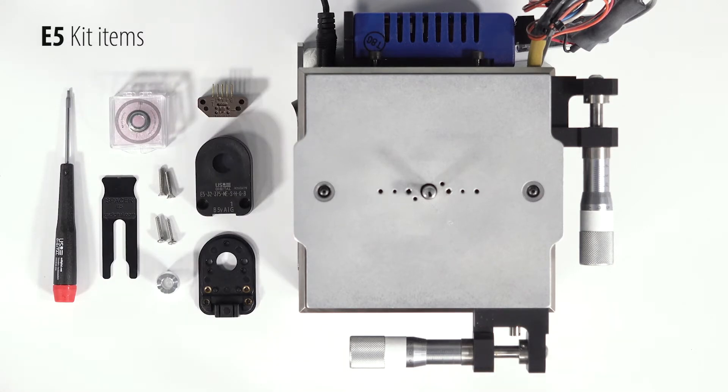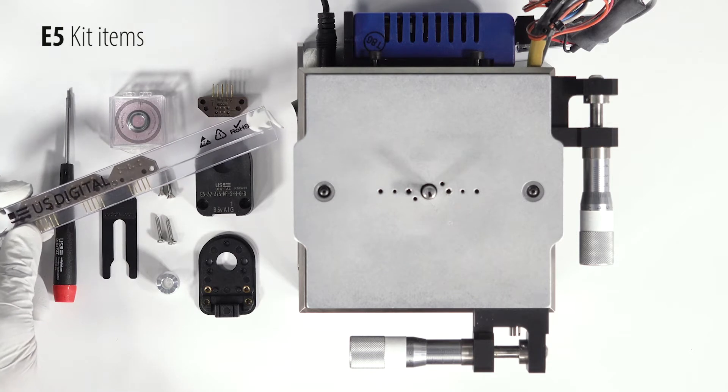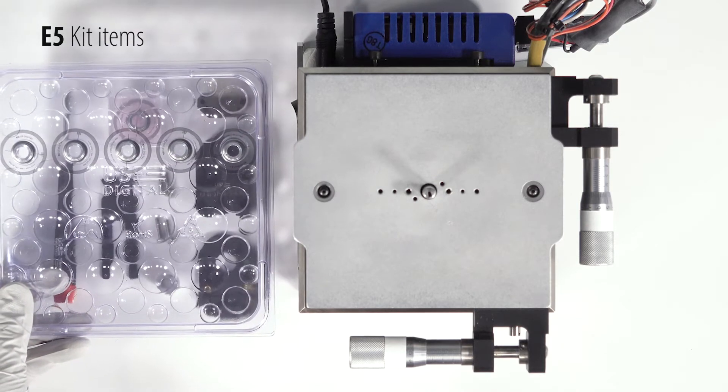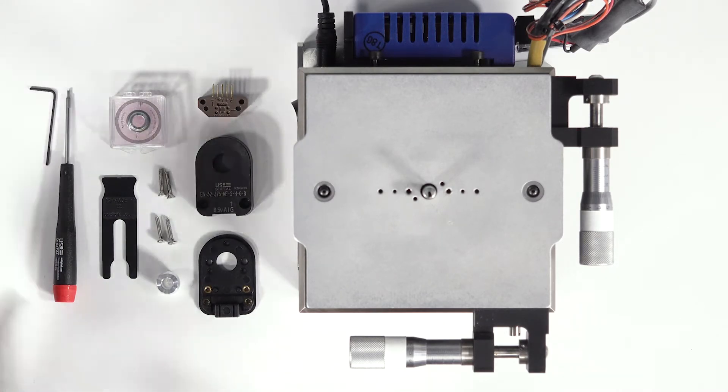Your encoder modules may be packaged in an ESD bag or in a tube like this. And your encoder hub disk may be packaged in a jewel case or in a large tray. The hex tool could be a driver style or a smaller key like you see here.